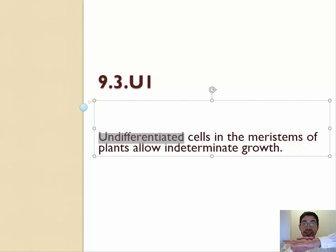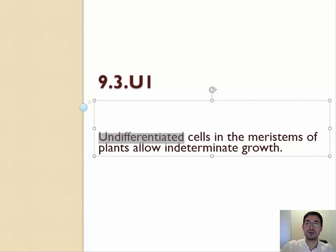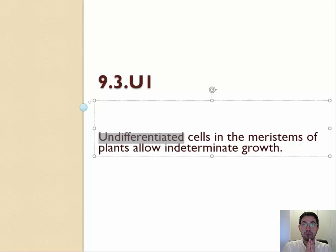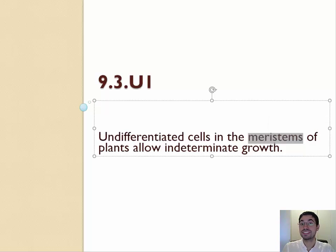Just like our skin has stem cells that grow new layers of skin, and in our bone marrow, you have hematopoietic stem cells that make all the different types of blood in your body. Plants have their own versions of stem cells that allow them to grow new cells. These stem cells in plants are in areas called meristems — this is where the plant's stem grows from.